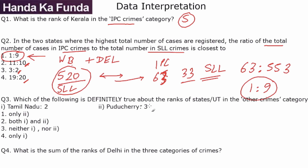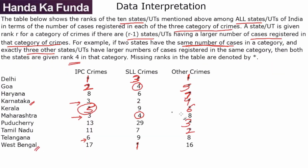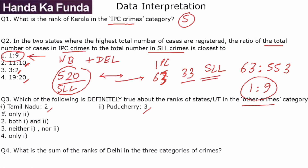Question 3: Which of the following is definitely true in the other crimes category? The options state Tamil Nadu is rank 2 and Puducherry is rank 3 — both of which are correct based on our analysis. So both statements 1 and 2 are correct, making option 2 the answer.